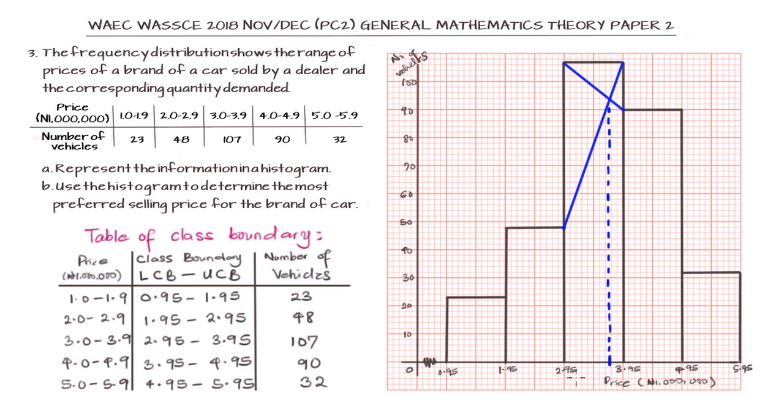We have initially 2.95 and then we have some entries. If we grade this between 2.95 and 3.95, this will be 0.75. And then adding 0.75 to 2.95 will give us the most preferred price in millions of naira. That will be 2.95 plus 0.75, and that will give us 3.75. But remember, we are working with millions of naira. So that will be 3,700,000 naira.